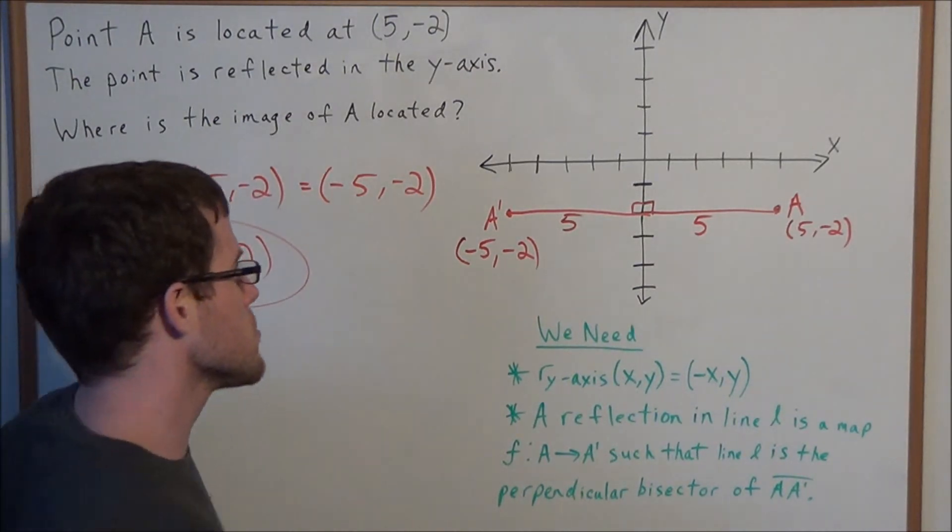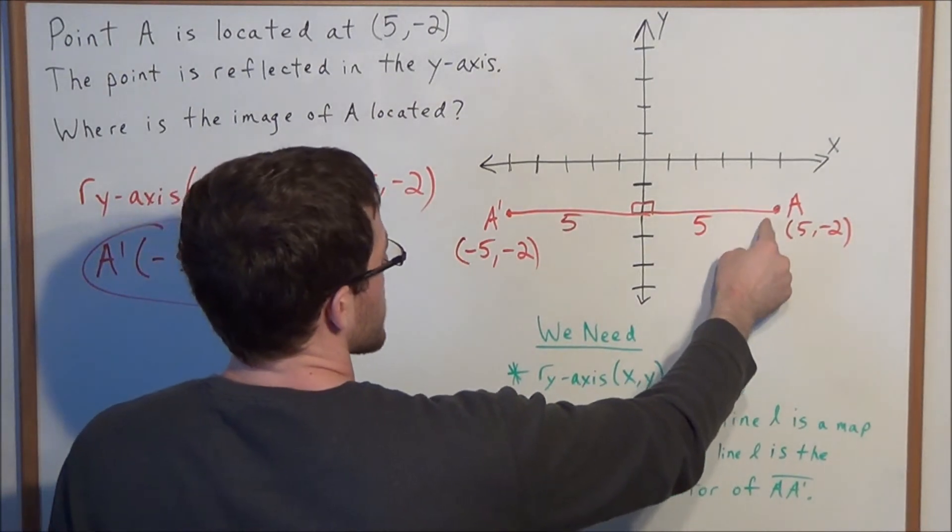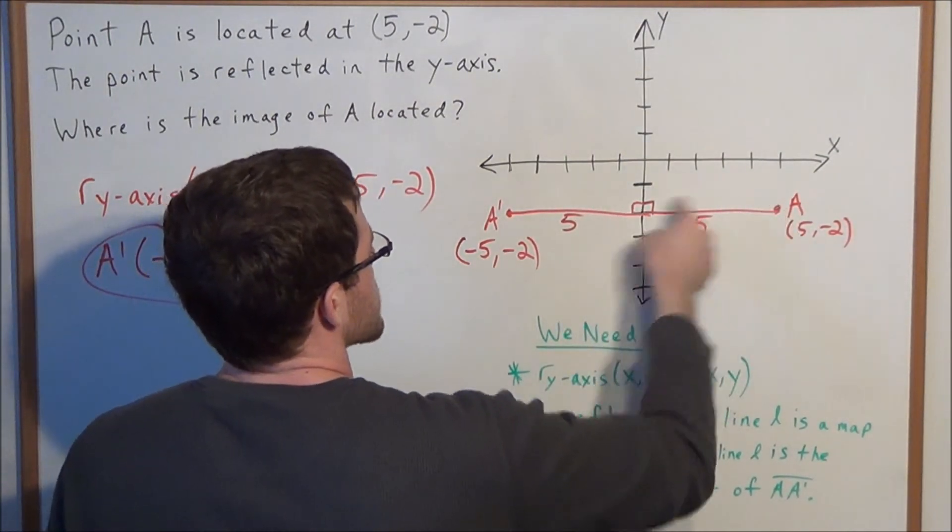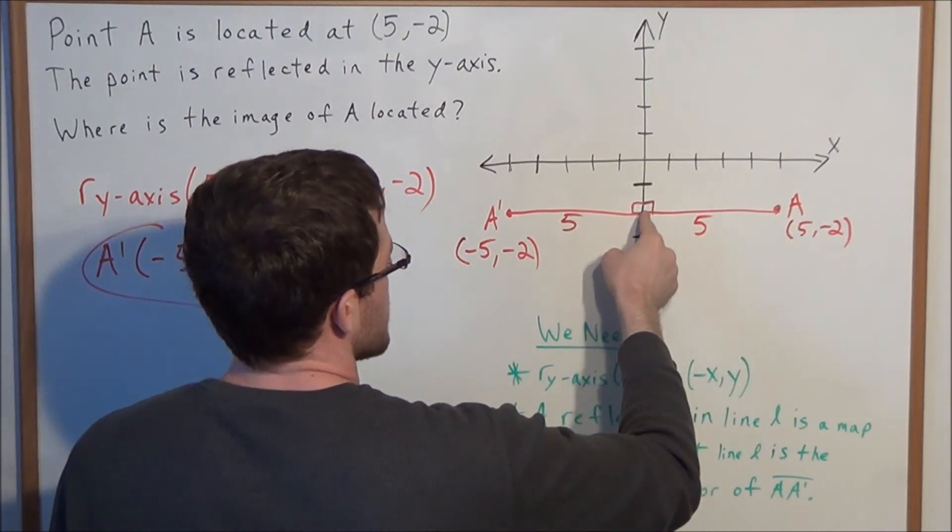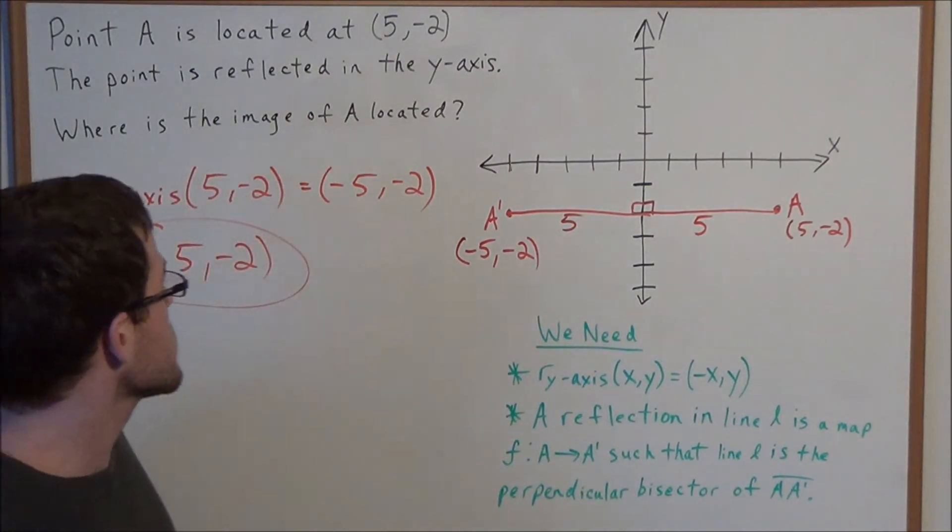Remember, we could always build our answer if we understand the concept. So start at the point A if we're reflecting in the y-axis, go straight back to the y-axis, count how many units, and then go the same number of units away from the y-axis the other way.